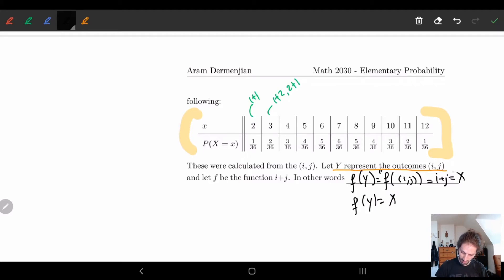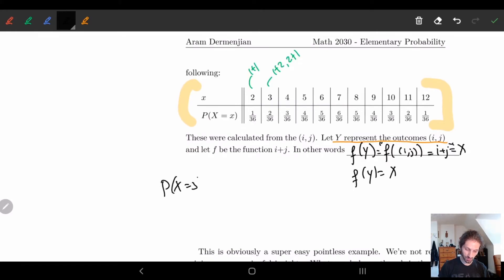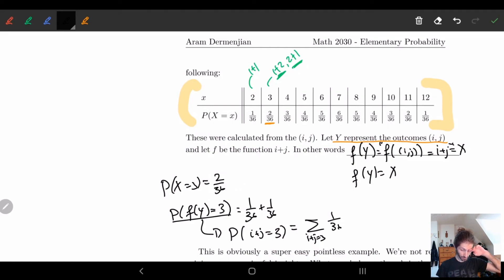This part is kind of in quotes. It's not exactly this, but yeah. So what does this give? So if we say P of X equals 3, well, this we've calculated, right? P of X equals 3, this we have is 2 over 36. But another way we can kind of do this is to write it as P of f of Y equals 3. And in this case, this is going to be 1/36, which is 1 from 1 plus 2, and 1 of this, plus 1 of 36. So in other words, what we really have here is P such that i plus j equals 3. Because there's two different ways to do this, right? So i equals 2, j equals 1, and i equals 1, j equals 2.